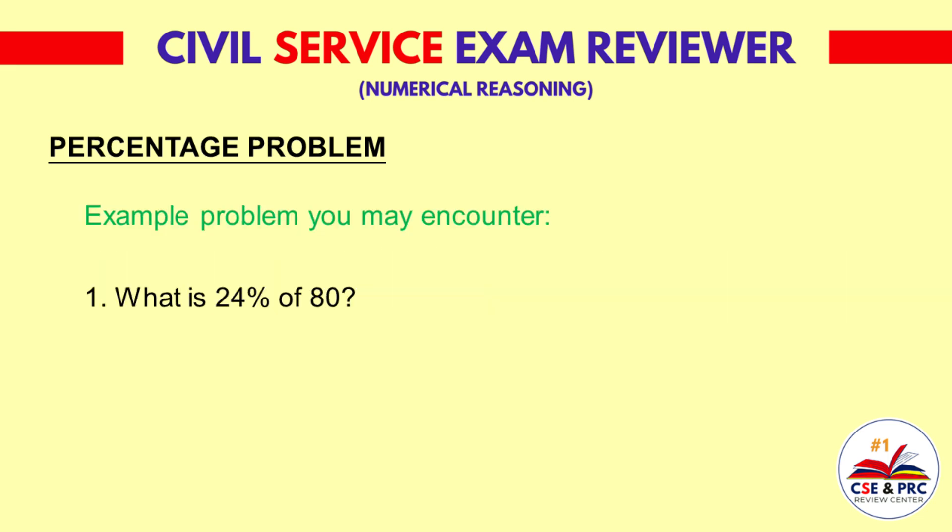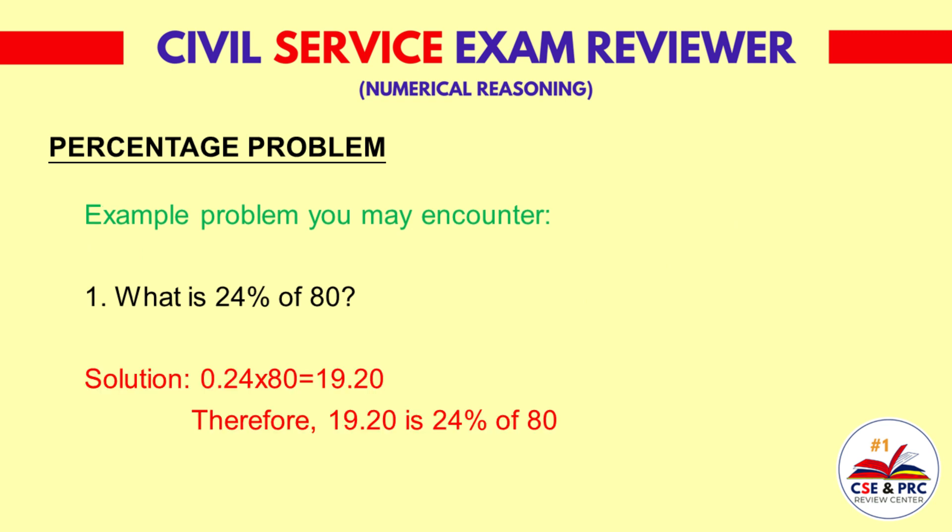Sample problems you may encounter. Number 1: What is 24 percent of 80? To get 24 percent of 80, you simply multiply 24 percent or 0.24 by 80. The answer is 19.20. Therefore, 19.20 is 24 percent of 80.